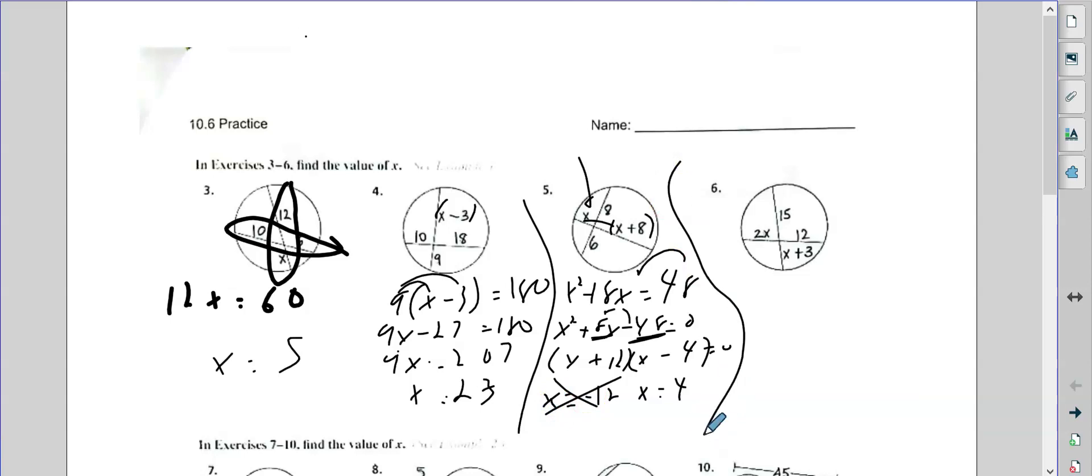All right. So here, I'm going to have 12 times 2x. I'm just going to multiply straight away. That's 24x equals, I'm going to distribute again, 15x plus 45. So when I subtract 15x, I'm going to get 9x. And then I divide it by 9. x is 5.